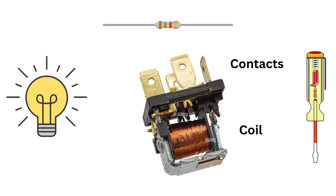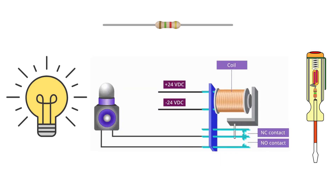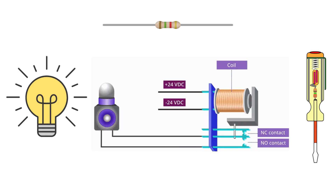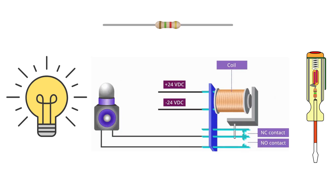Let's see how this works in real life. Here's a contactor. When the coil gets powered, it pulls these contacts together — click — and just like that, the circuit is complete. Now power can flow through and whatever device you are controlling, whether it's a motor or a light, turns on.